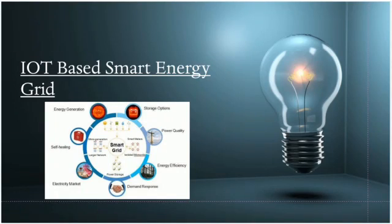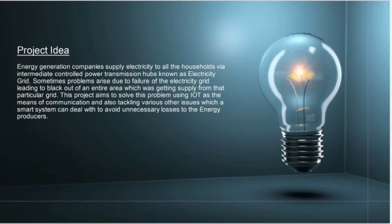Project name: IoT based Smart Energy Grid. Project idea: Energy generation companies supply electricity to all the households via intermediate control power transmission hubs known as electricity grids. Sometimes problems arise due to the failure of electricity grids leading to blackout of an entire area which was getting supply from that particular grid. This project aims to solve this problem.